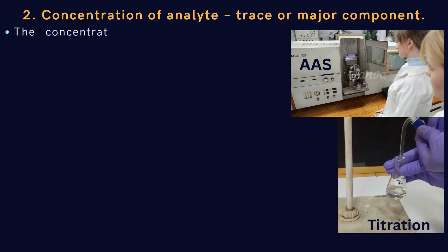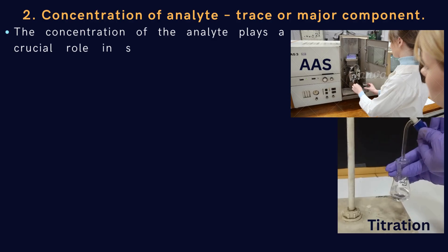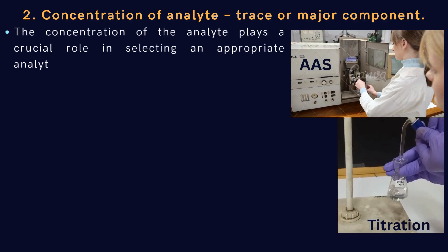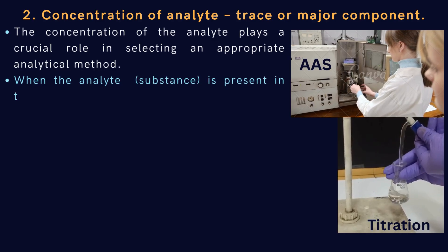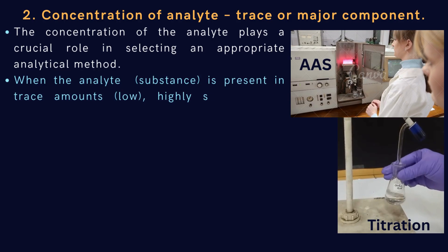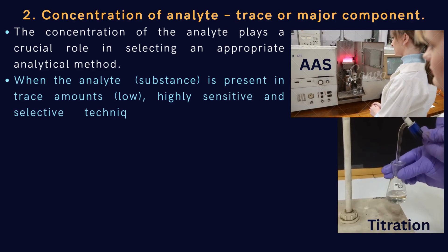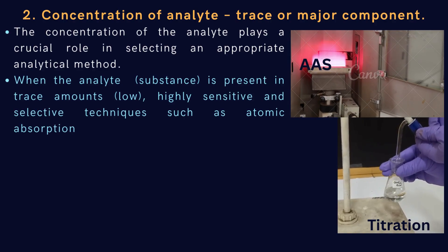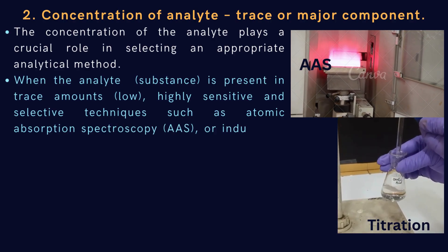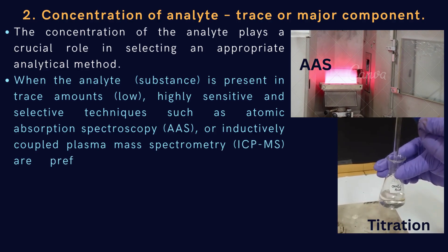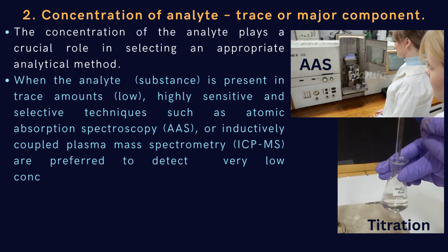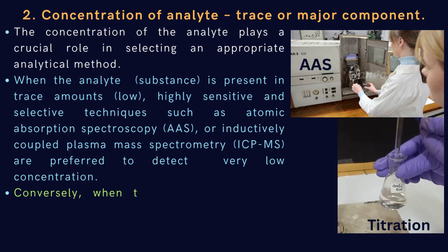Second one is concentration of analyte: trace or major component. The concentration of the analyte plays a crucial role in selecting an appropriate analytical method. When the analyte is present in trace amounts, highly sensitive and selective techniques such as atomic absorption spectroscopy AAS or inductively coupled plasma mass spectrometry ICP-MS are preferred to detect very low concentration.